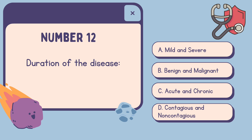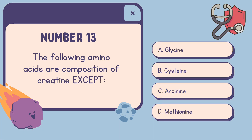Number 12: Duration of the disease — A. Mild and severe, B. Benign and malignant, C. Acute and chronic, D. Contagious and non-contagious. The correct answer is C, Acute and chronic.